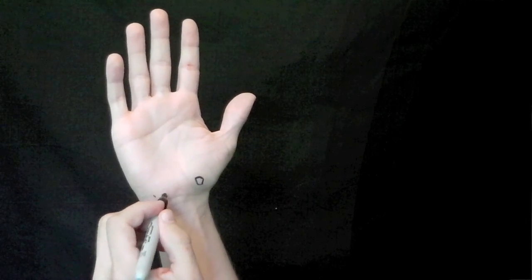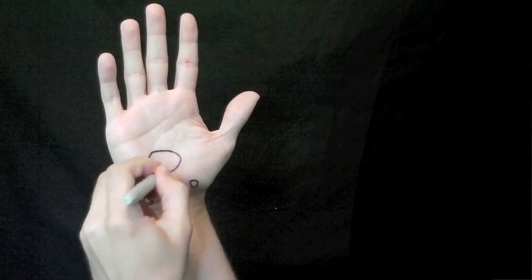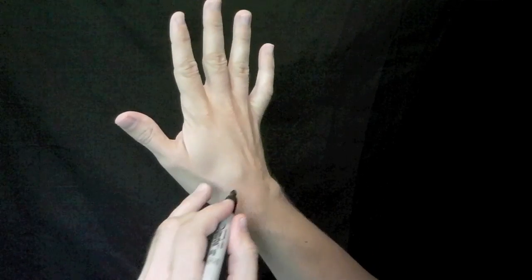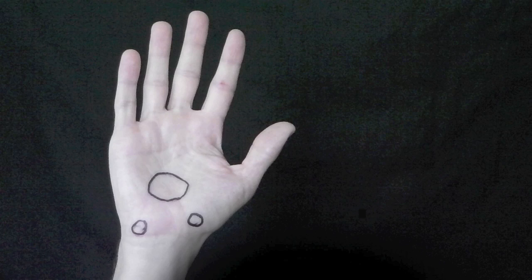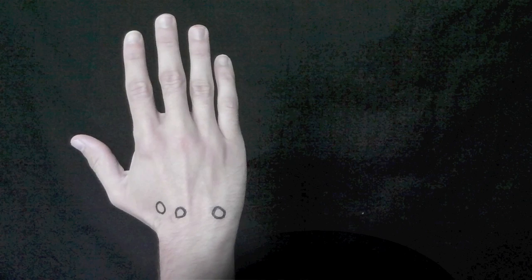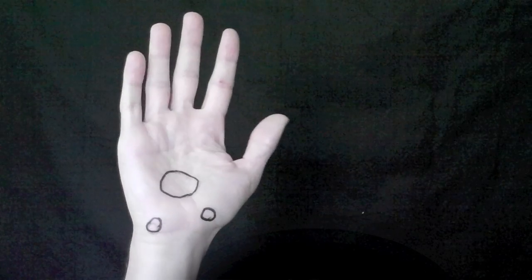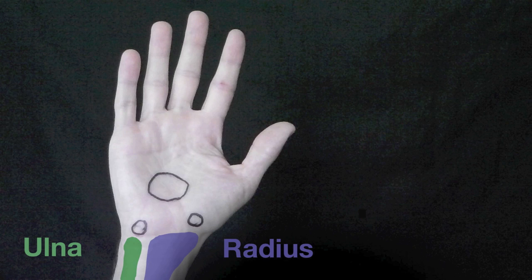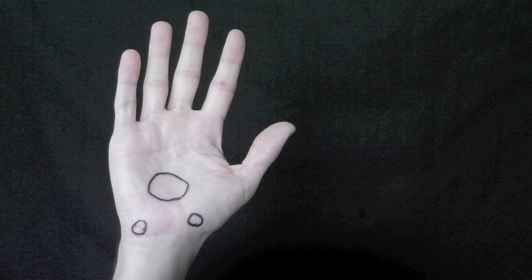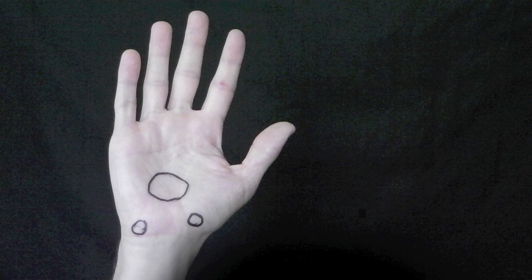I'm drawing the general places where the wrist flexors and extensors attach. Let's go ahead and start naming all these — I'll show you the naming convention that will make learning the names of these muscles extremely easy. The muscles on the palm side are flexors and the muscles on the back side of the hand are extensors. The radius is on the side of the thumb and the ulna is on the side of the small finger. The last bit of information you need to know is that carpi means wrist.